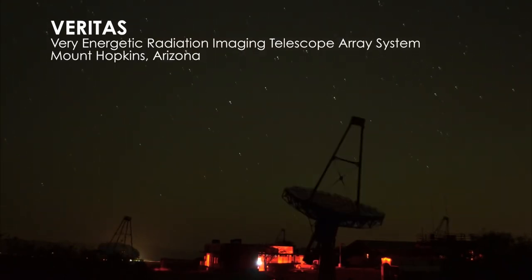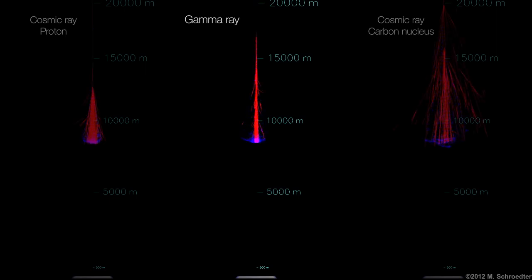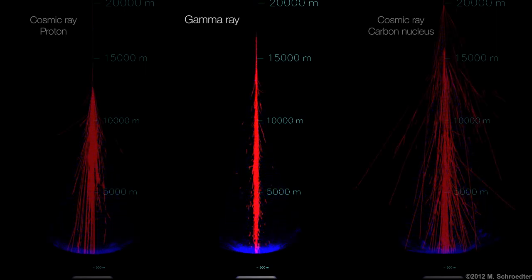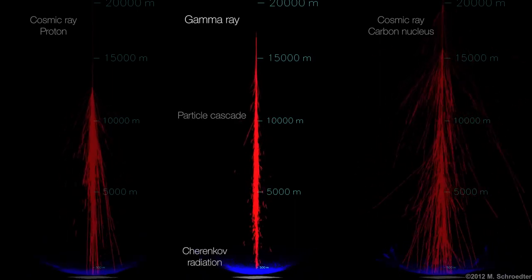Both MAGIC and VERITAS work by catching faint flashes of visible light produced when a high-energy gamma ray strikes the upper atmosphere. This creates a shower of fast-moving charged particles that emit a glow called Cherenkov radiation.